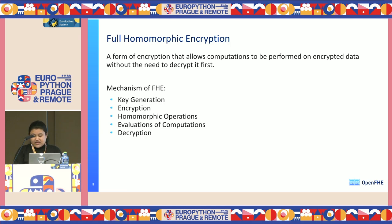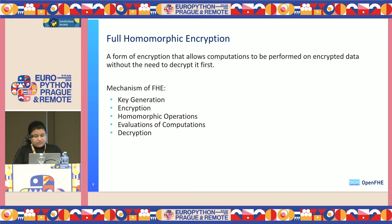Full homomorphic encryption allows computation to be performed on encrypted data, meaning data can be processed and analyzed while remaining encrypted, ensuring privacy. The mechanisms are key generation, encryption, homomorphic operations, evaluation of computations, and finally decryption. Some encrypted ML approaches with FHE include the approximate approach (the CKKS scheme), a hybrid of approximate and lookup table, and the lookup table approach alone.